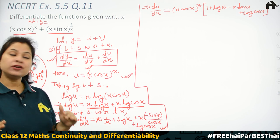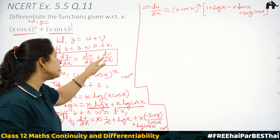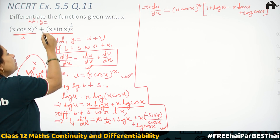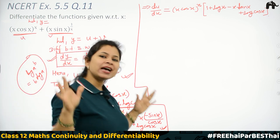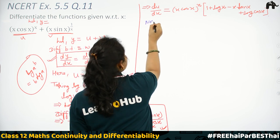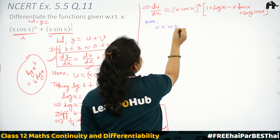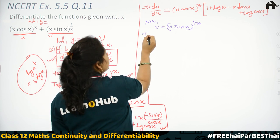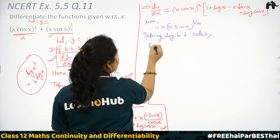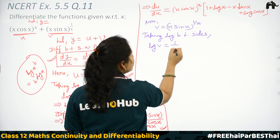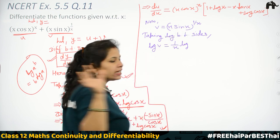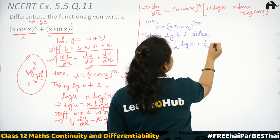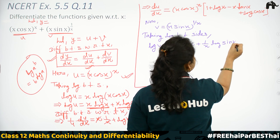Now we have to start calculating dv/dx. Our v is x·sin(x) to the power 1/x. So taking log of both sides: log v = (1/x)·log(x·sin x). Using log product rule: log v = (1/x)·log x + (1/x)·log(sin x).